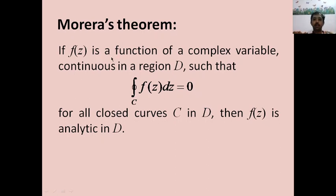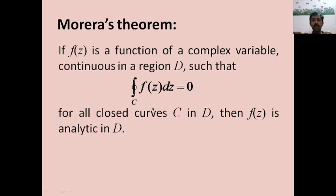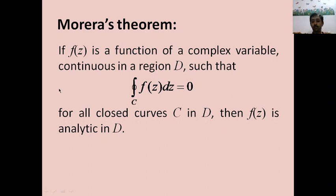So in Morera's theorem, if f(z) is continuous in a region D such that the integral over C of f(z) dz equals 0 for all closed curves C in D, then f(z) is analytic in D. This is the statement of Morera's theorem; I am not dealing with the proof of this theorem right now.